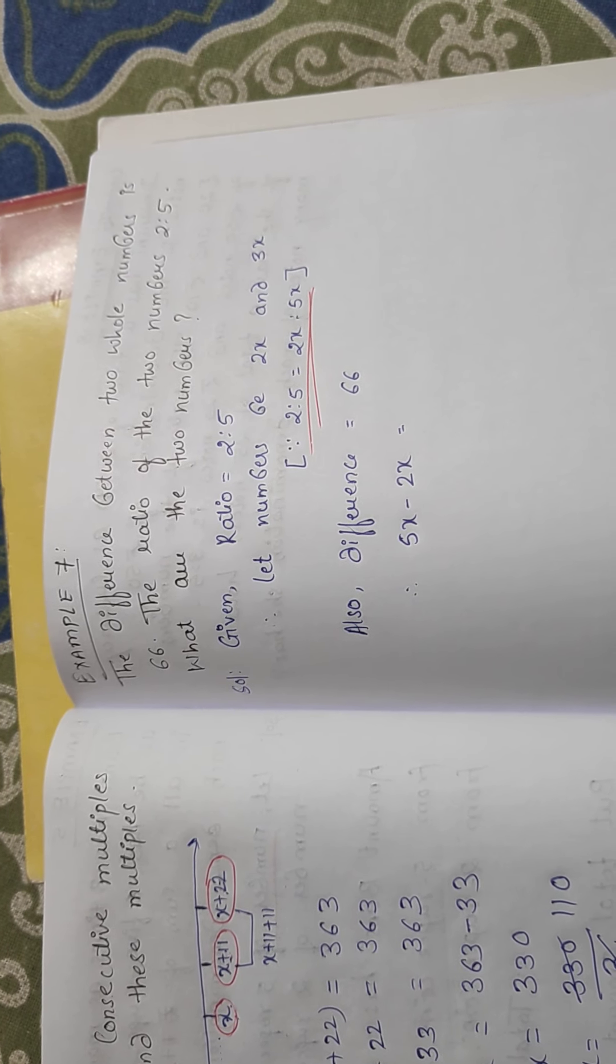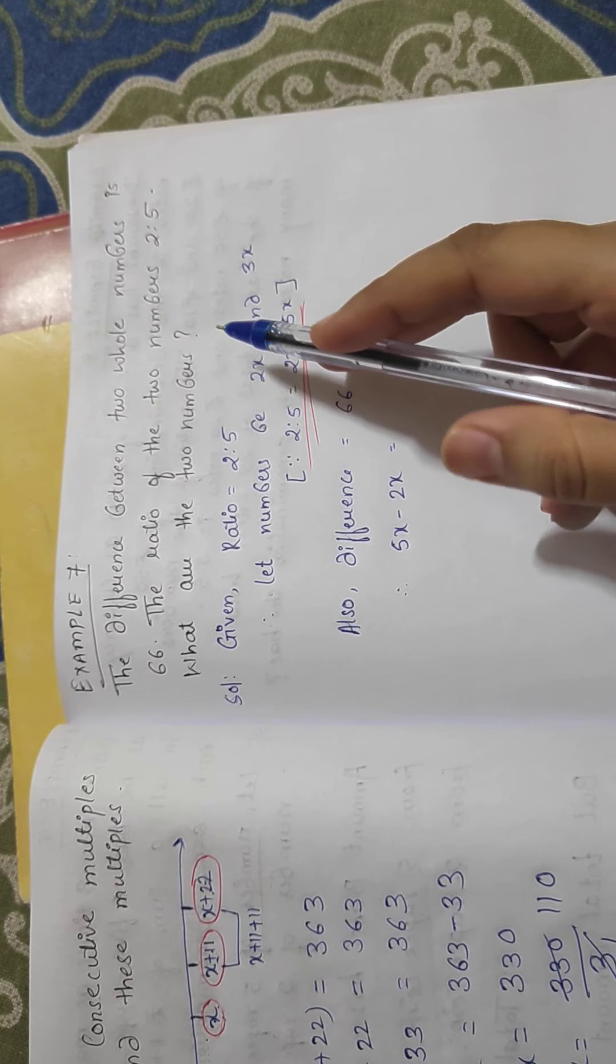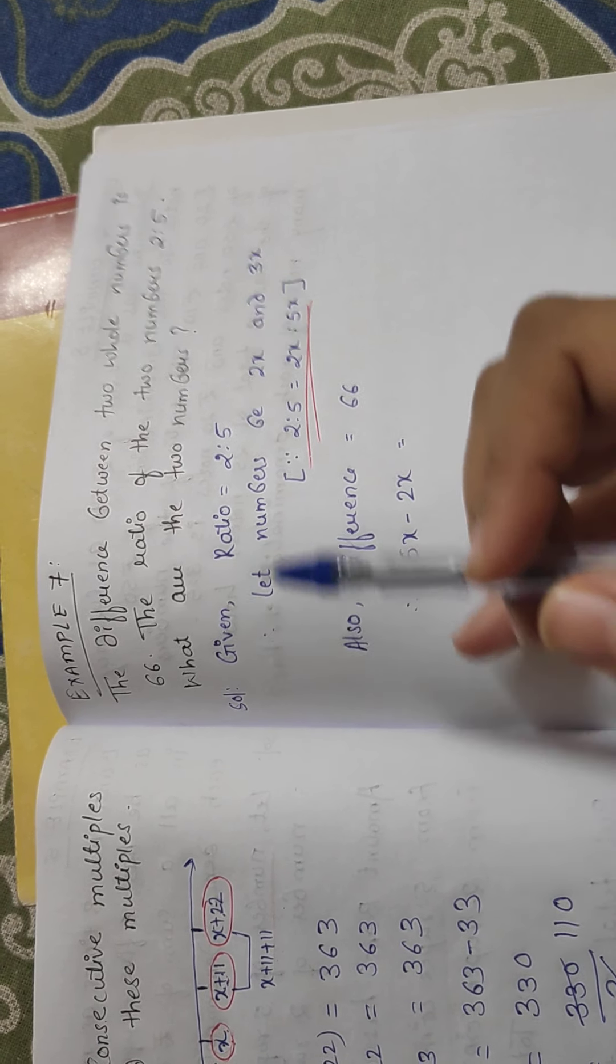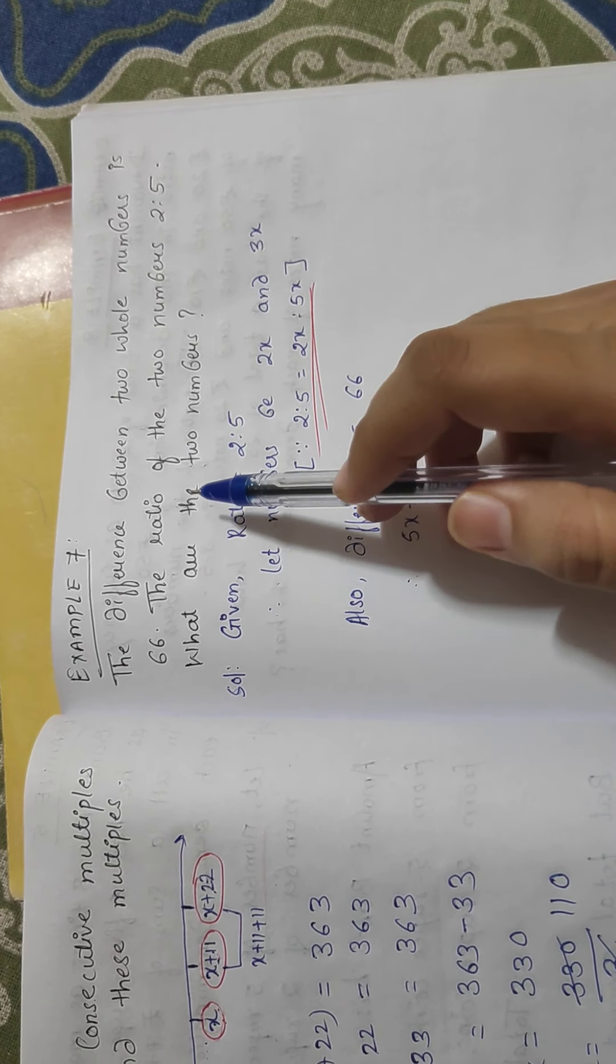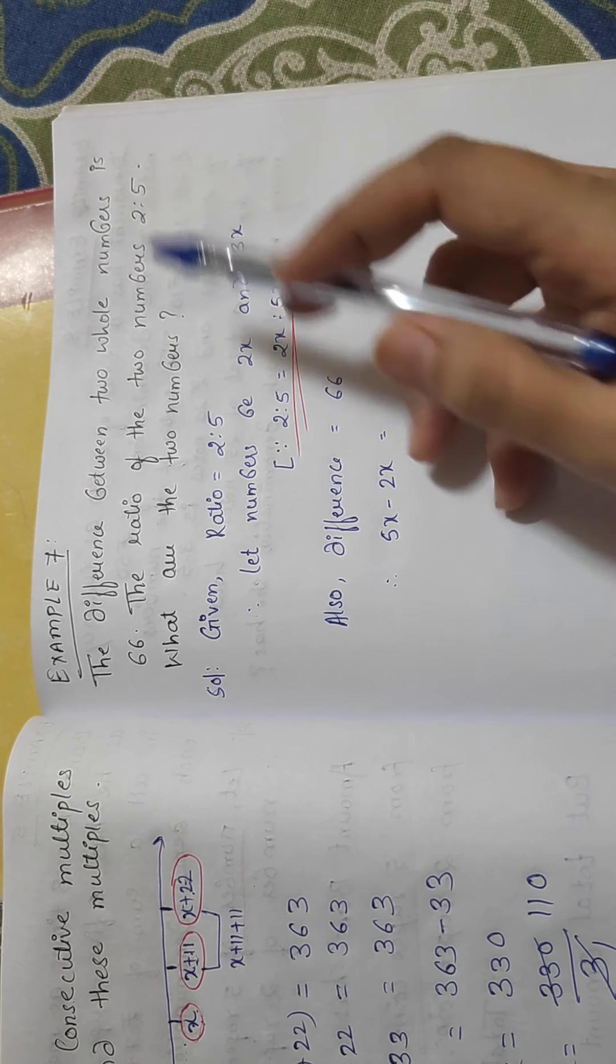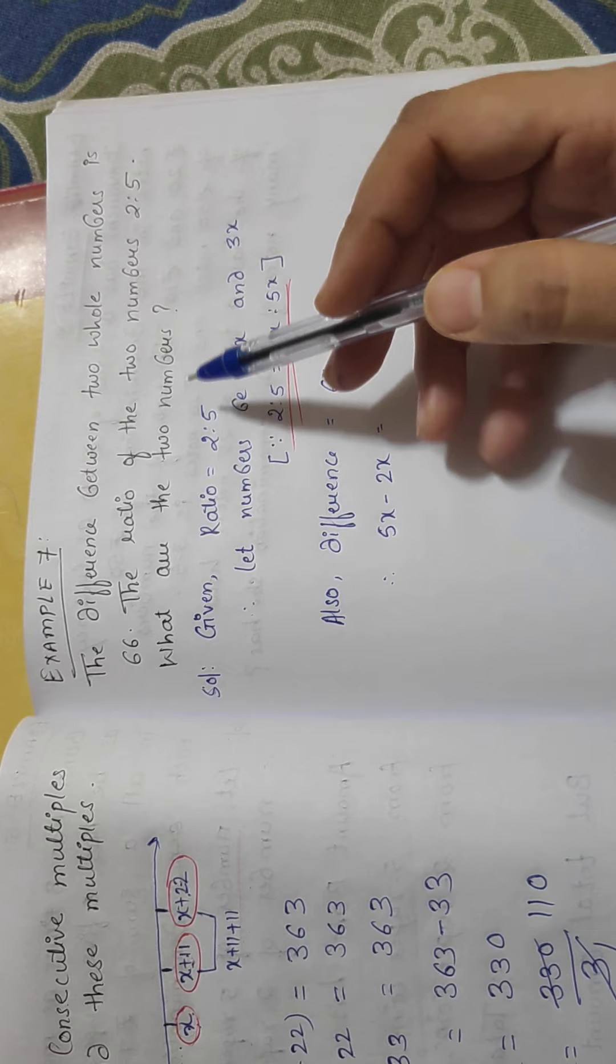Okay, now example number 7. The difference between two whole numbers is 66. They have given the difference between two whole numbers. The ratio of the two numbers is 2 is to 5. What are the two numbers?